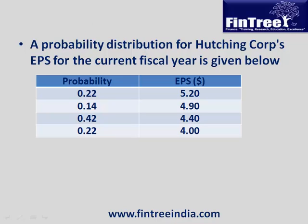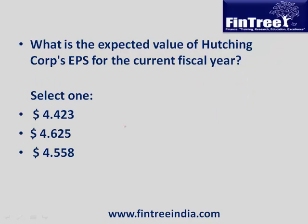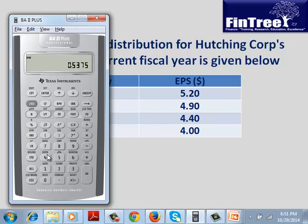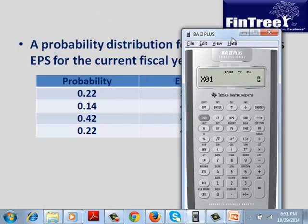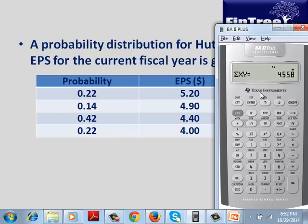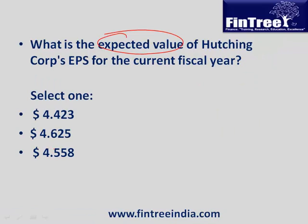A probability distribution for Hutchings Corp's EPS for the current fiscal year is given. Calculate the expected value of EPS. Expected value is simply the weighted average. Using the calculator's stat function (2nd 7, 2nd clear work): enter X values as probabilities (0.22, 0.14, 0.42, 0.22) and Y values as EPS (5.2, 4.9, 4.4, 4.4). Then press 2nd 8 and search for summation XY — this directly gives the weighted average of 4.55.